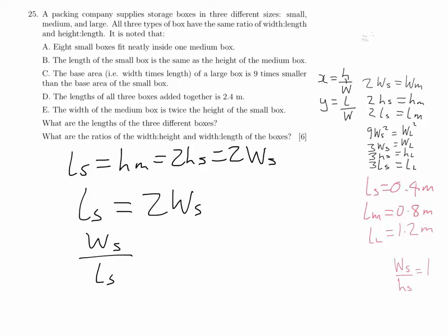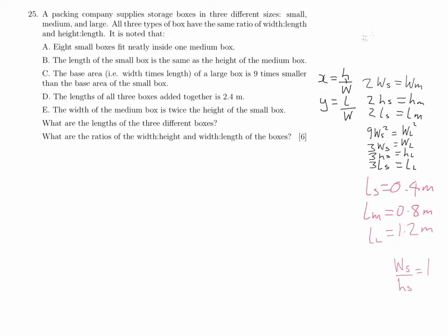To summarise: the width-to-height ratio is 1, the width-to-length ratio is one half, and the lengths of the small, medium, and large boxes are 0.4 metres, 0.8 metres, and 1.2 metres respectively.